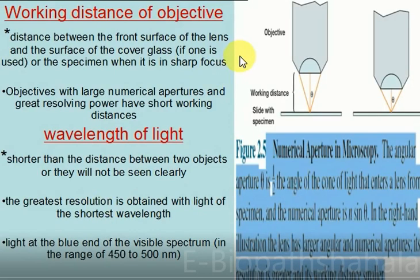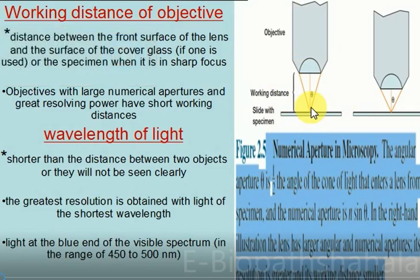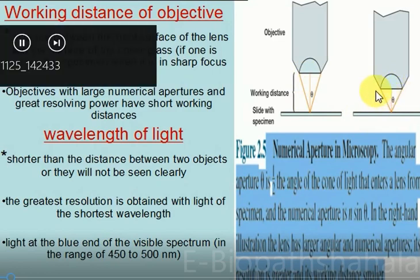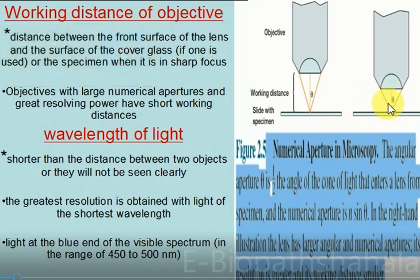Working distance of the objective is the distance between the front surface of the lens and the surface of the cover glass, or directly the specimen, when it is in sharp focus. Objectives with large numerical aperture have greater resolving power, and the working distance should be smaller. When working distance is smaller and numerical aperture is greater, resolving power is greater, where theta is the half-angle of the cone of light that enters the objective lens from the specimen.